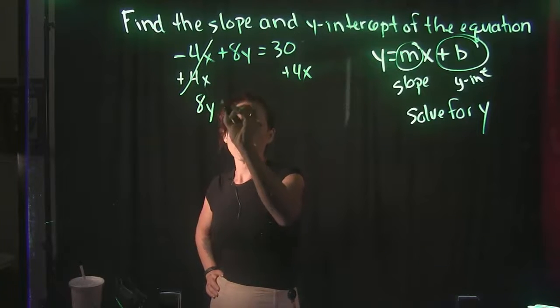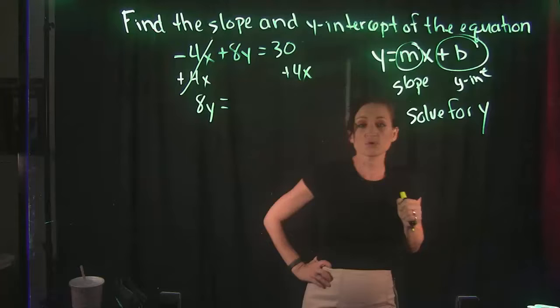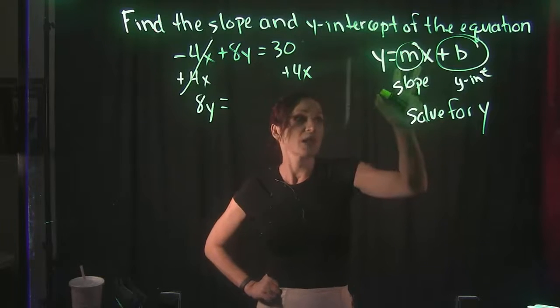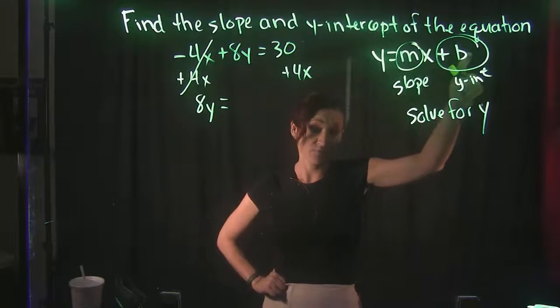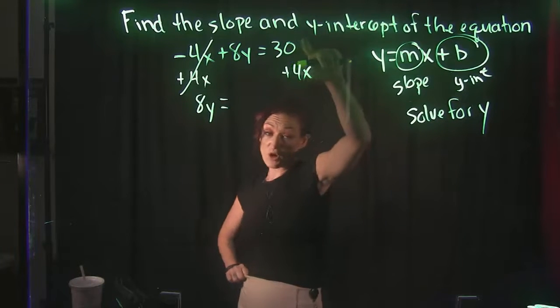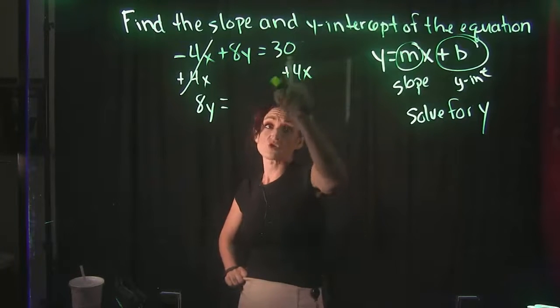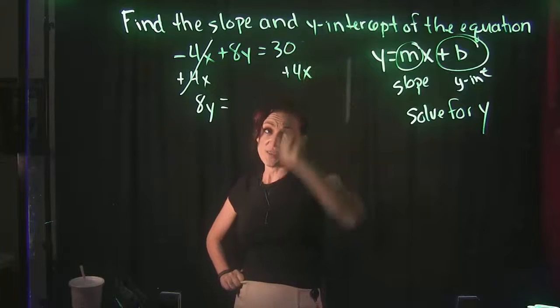and we drop down 8y. And that's going to equal to, now pay attention, slope-intercept form. We have our x value first, our number followed behind it. So when I drop down this right-hand side, I'm going to drop down the x term first, then the number.